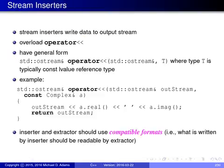Stream inserters are used to write data to an output stream, accomplished by overloading 'operator<<'. The general form takes two parameters: an lvalue reference to an ostream (the output stream), and the data to output, where the second parameter is typically a const lvalue reference for efficiency and const correctness, since the output operator shouldn't modify the object it's printing and passing by reference avoids copying potentially large objects.